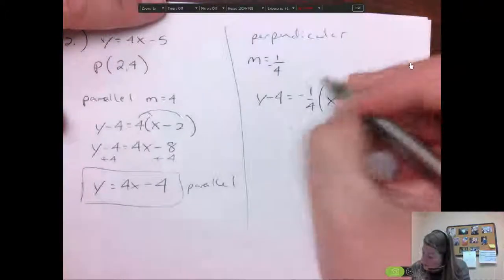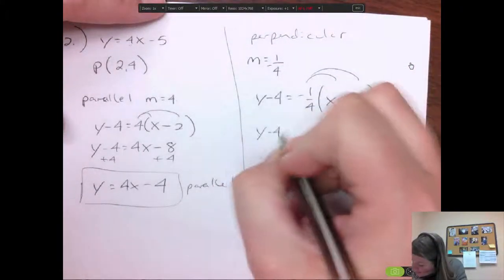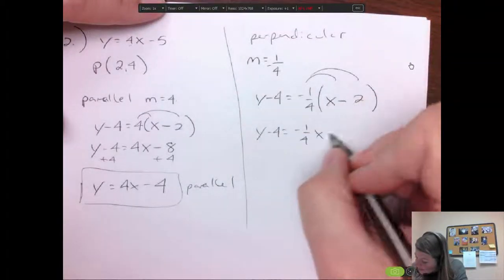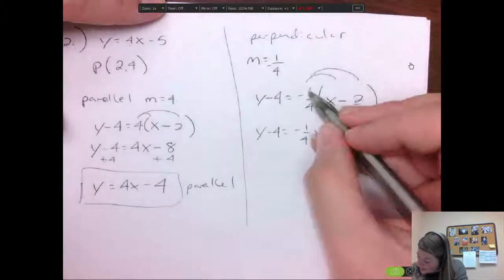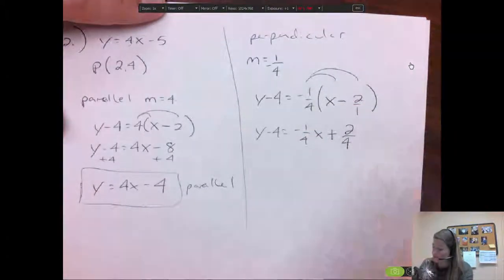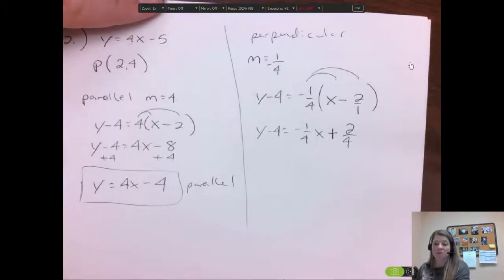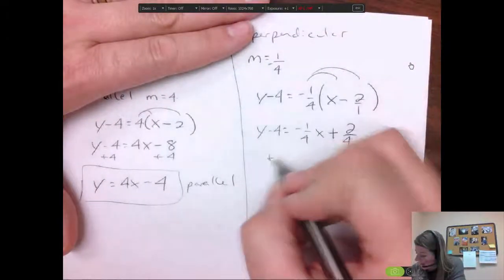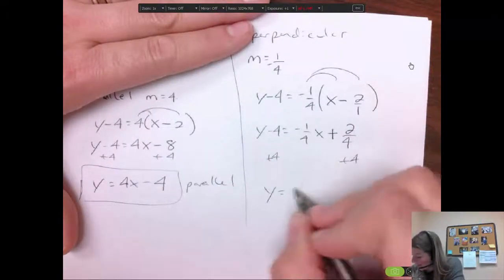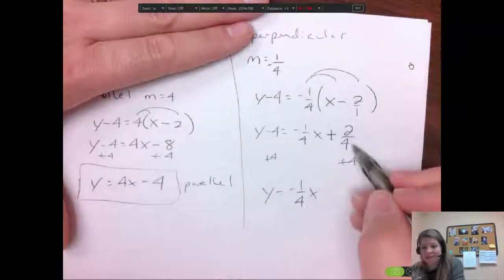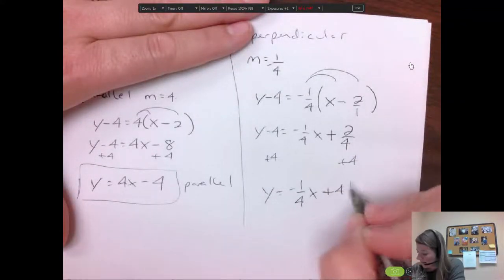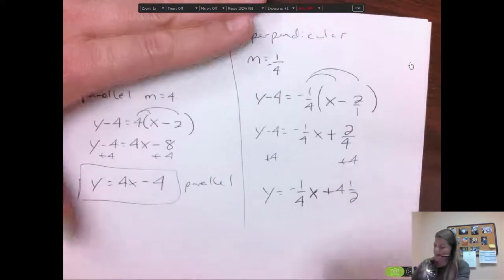So times the 1 fourth through and you have y minus 4 equals negative 1 fourth x. Negative times a negative is going to give you a plus. Think of this as 2 over 1. So 1 times 2 is 2. 4 times 1 is 4. So you have 2 fourths, which does reduce to a half. And then I'm going to add the 4 over. And I get y equals negative 1 fourth x. And what is, think of this as a half plus 4. It's going to be a positive 4 and a half. And that's it.